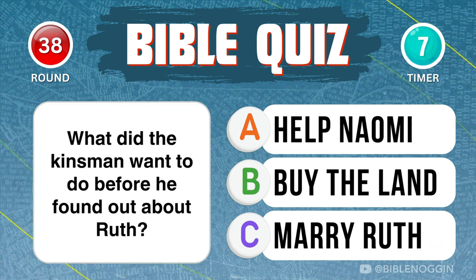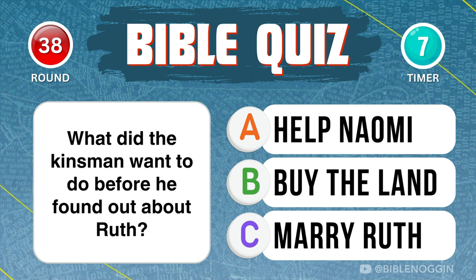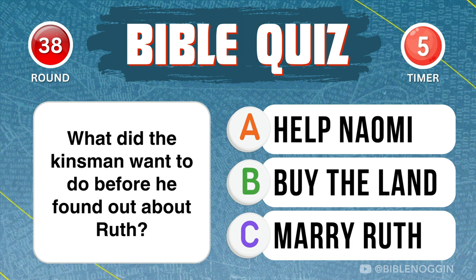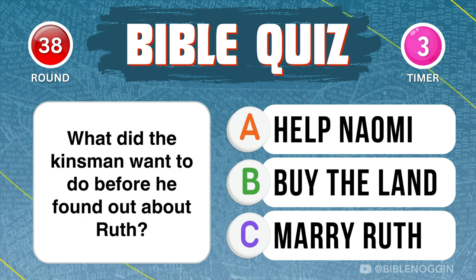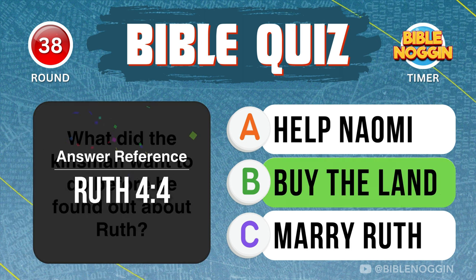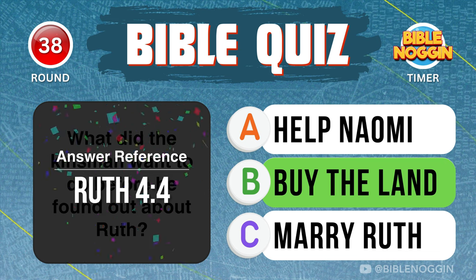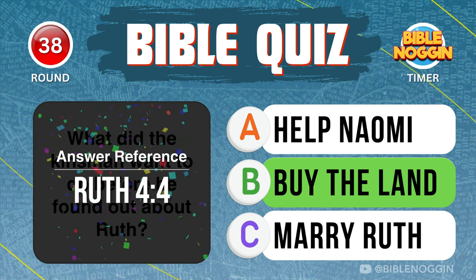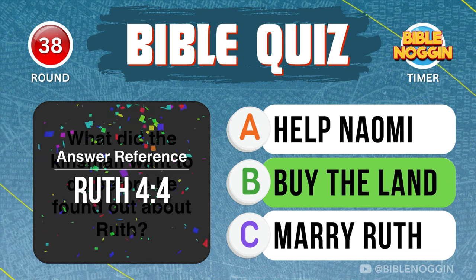Question 38: What did the kinsman want to do before he found out about Ruth? He wanted to buy the land — found in Ruth chapter 4, verse 4.